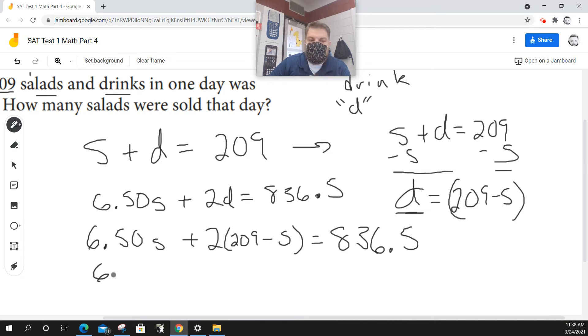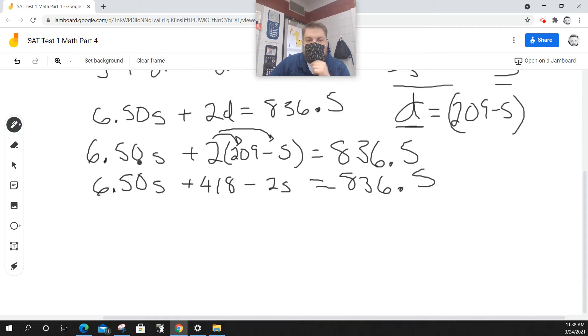So now to solve this, I'm going to say 6.50S plus, now I've got to distribute this through the parentheses, 2 times 209 is 418, 2 times negative S is negative 2S, and all of that is equal to 836.5. In the next line, I'm going to combine like terms. What's 6.50S minus 2S? 4.5S plus 418, and that's equal to 836.5.